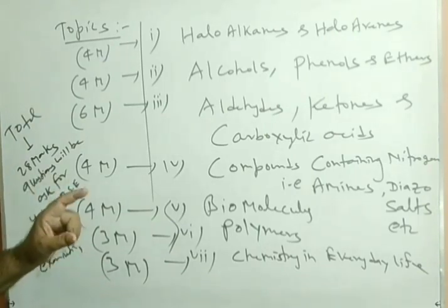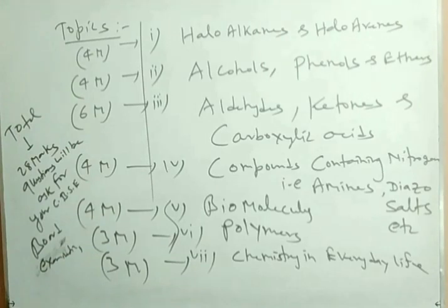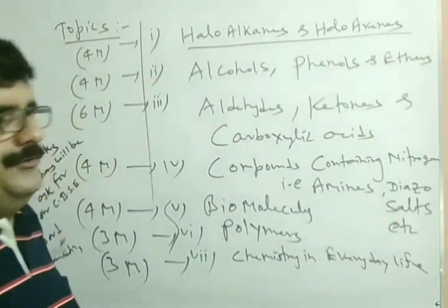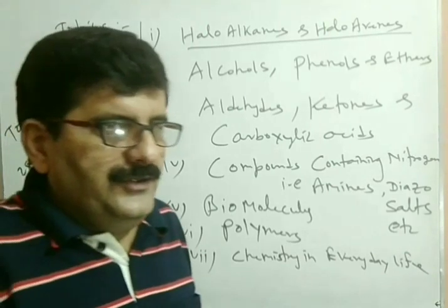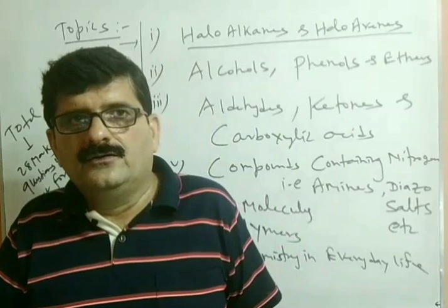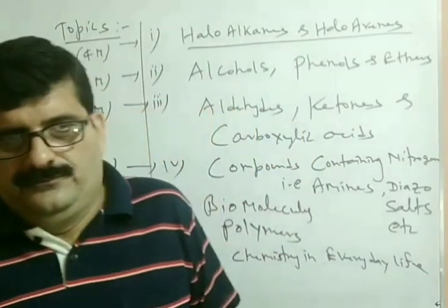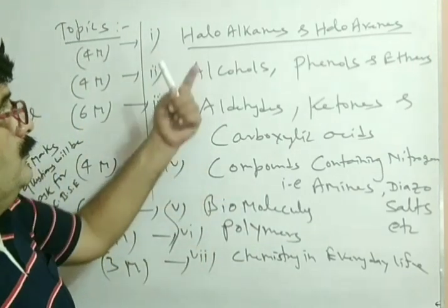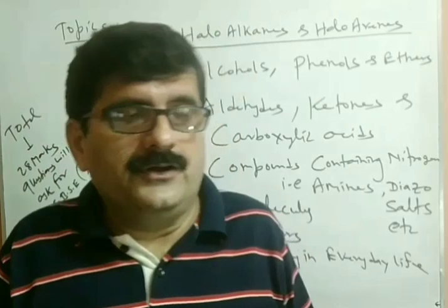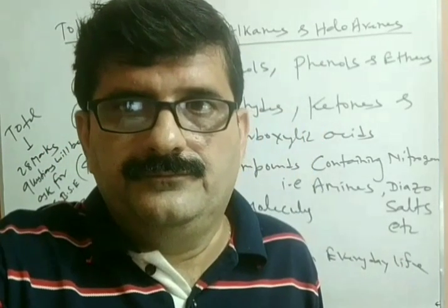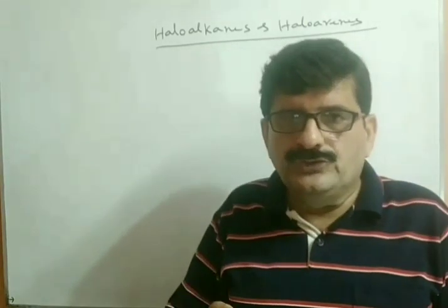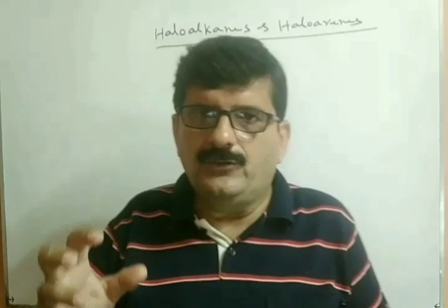Today, first of all, we have to start our first lesson of organic chemistry, that is haloalkanes and haloarenes. This lesson is also based upon your previous lesson. You know very well, two types of hydrocarbons are well known: the first one is known as aliphatic hydrocarbons, and the second one is called aromatic hydrocarbons. Carbon and hydrogen containing compounds are known as hydrocarbons.